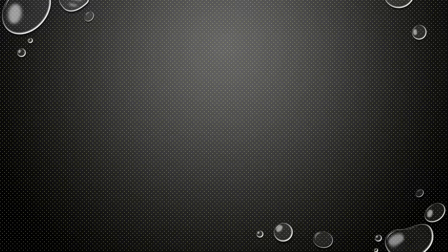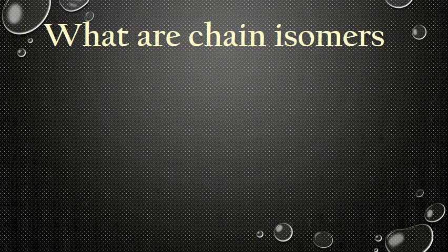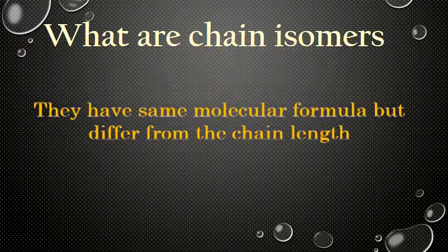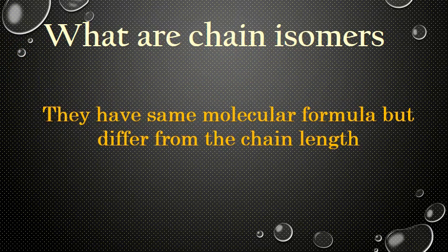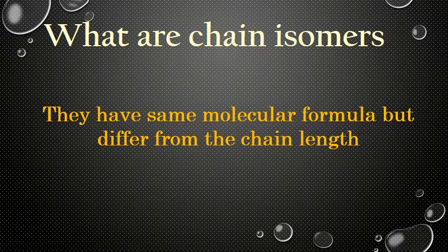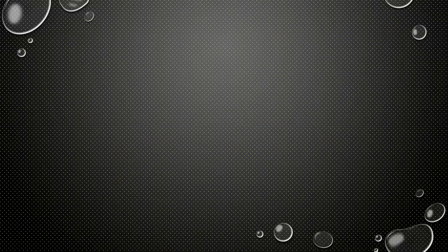Chain isomers have the same molecular formula but differ in the chain length — that is, they differ in the length of the main carbon chain. We can describe chain isomers with some examples.